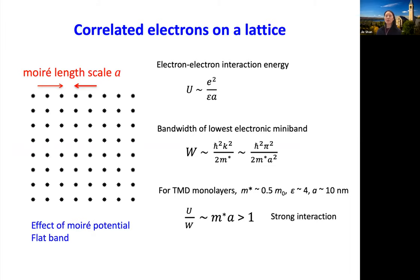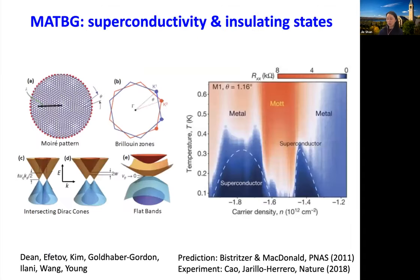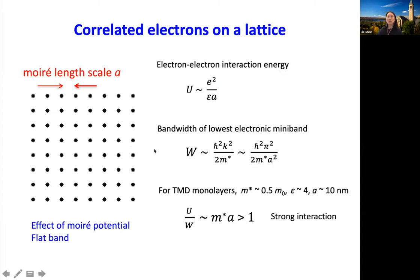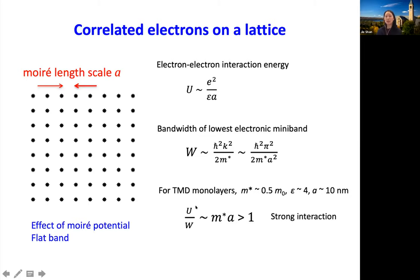Let's consider electrons on a lattice. This is the superlattice formed by the moiré pattern. The ratio of the interaction and the kinetic energy scales as mass of the particle and the separation. For the moiré system with a period on the order of 10 nanometers, and for typical 2D semiconductor like the transition metal dichalcogenides, we have mass on the order of half, then you can get this ratio to be much bigger than one and get into the strong correlation regime.